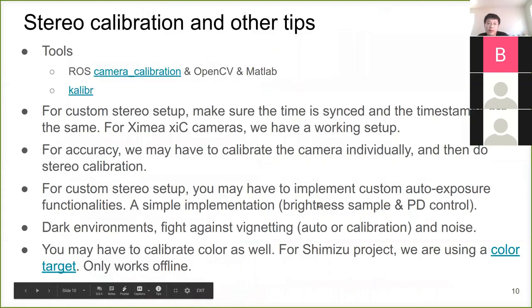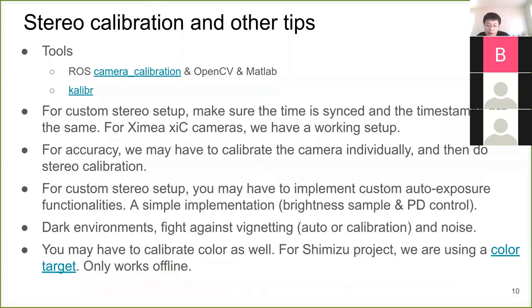Here are some tips from my previous work on stereo calibration. Calibration is really important, and people are already familiar with tools provided by ROS and Kalibr. Specifically for ROS, the camera calibration package essentially uses the OpenCV implementation. For a custom stereo setup, you have to make sure the timestamps are synced — I had an early experiment where inconsistent timestamps between the two cameras caused all sorts of trouble.